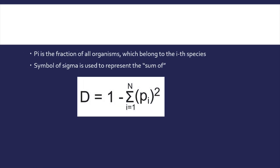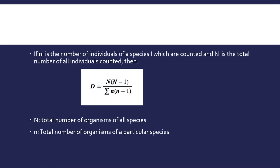The formula is: D = 1 − Σpi², where pi is the fraction of all organisms belonging to the i-th species, and sigma represents the total sum. Alternatively, D = Σn(n−1) divided by N(N−1), where n is the number of individuals of each species and N is the total number of individuals.